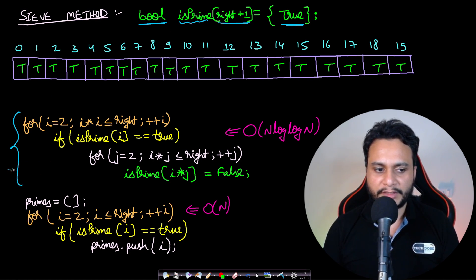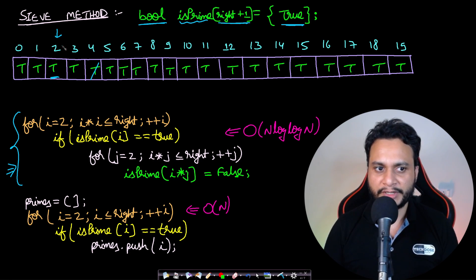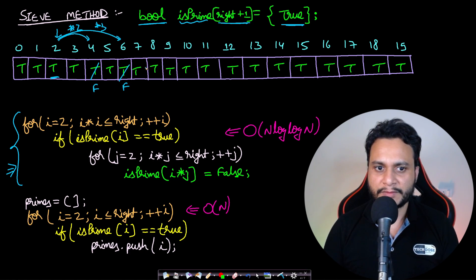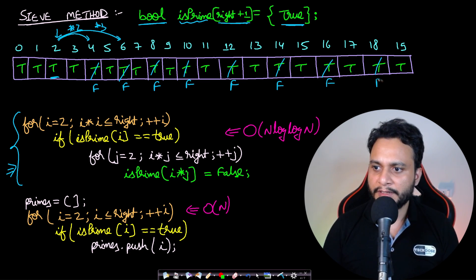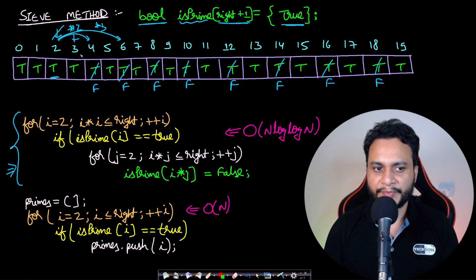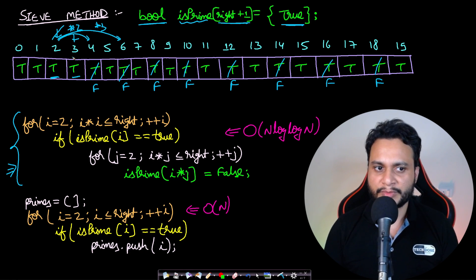We start from 2 and check if it is prime — yes it is. If it is prime, mark all its multiples as false, starting from the second multiple: 8 is false, 10 is false, 12, 14, 16, 18 are all marked false. 2 remains prime. Then check 3 — it is also prime, so mark all its multiples: 9 is marked false, 15 is marked false; 6, 12, 18 were already marked.